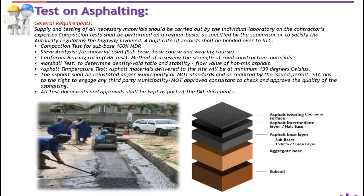Number three: California Bearing Ratio or CBR test — this test or method is for assessing the strength of road construction material. Number four: Marshall test — it determines the density, void ratio and stability flow value of hard mix asphalt. Number five: asphalt temperature test — asphalt material delivered to the site will be at a minimum of 139 degrees Celsius.